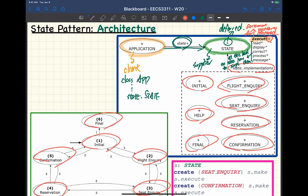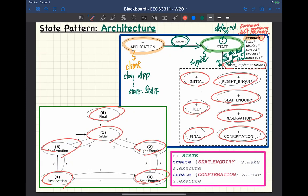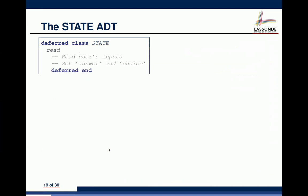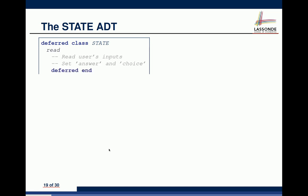In the deferred States class, we have: read (deferred), display (deferred), correct (deferred), process (deferred), message (deferred), answer (attribute), choice (attribute), and execute (implemented). The execute feature here is implemented by calling display, read, correct, message, and process — all of which are unimplemented at this level but will be implemented in each effective subclass.